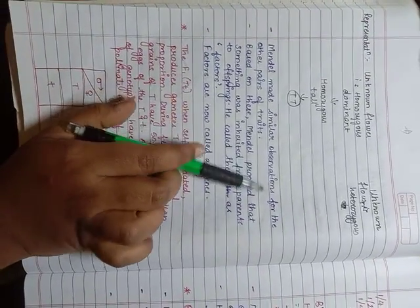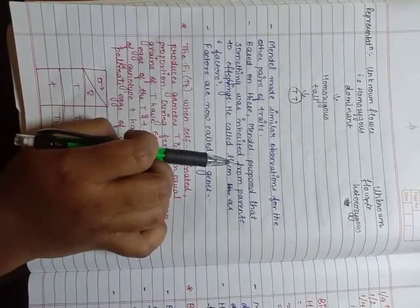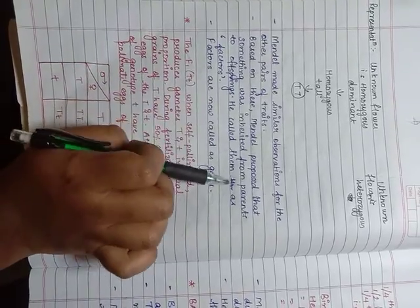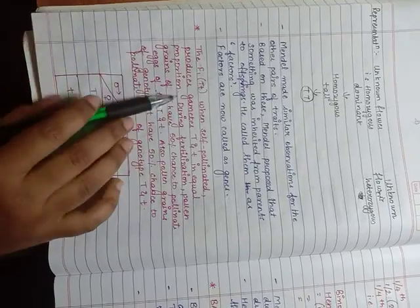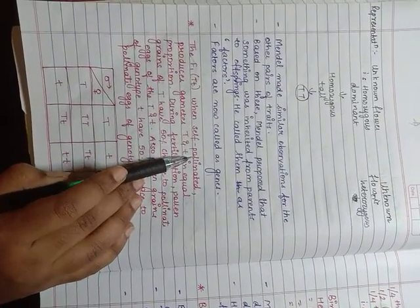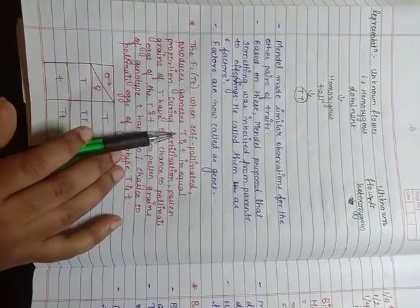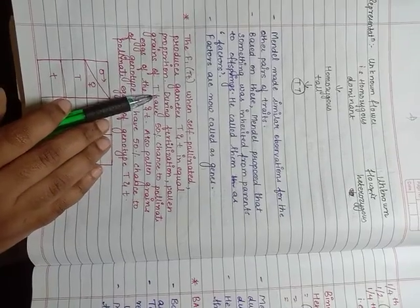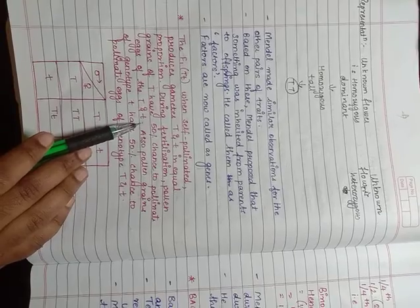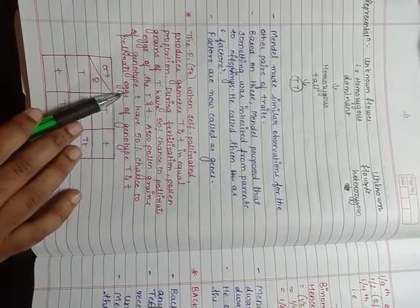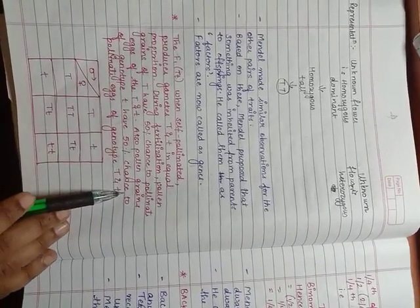Mendel made similar observations for the other pairs of traits. Based on these, Mendel proposed that something was inherited from parents to offspring. He called them as factors. Factors are now called as genes. The F1 that is Tt, when self-pollinated, produces gametes T and small t in equal proportion. During fertilization, pollen grains of T have 50% chance to pollinate the eggs of capital T and small t. Also pollen grains of genotype t have 50% chance of pollinating eggs of genotype capital T and small t.